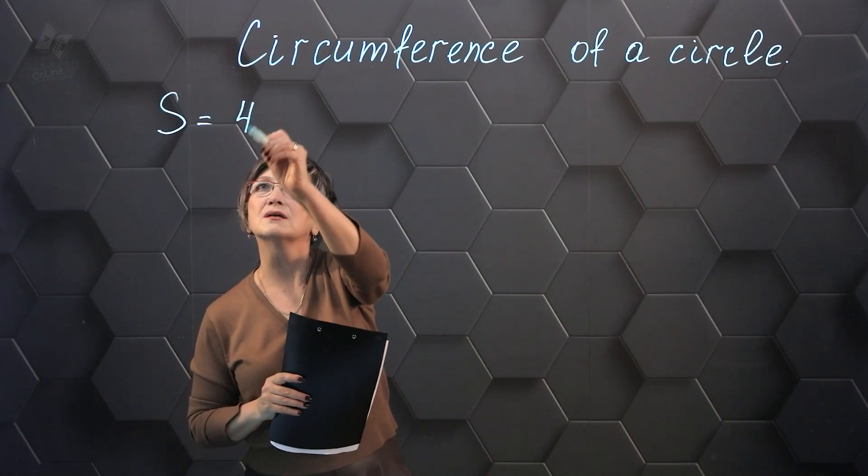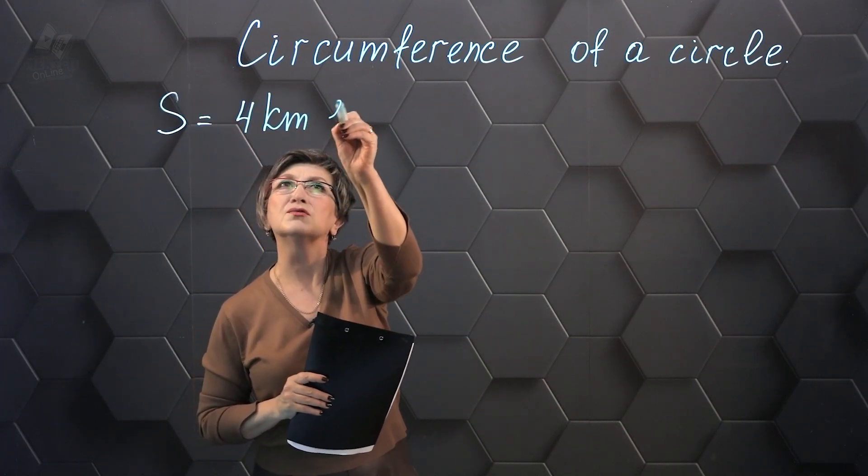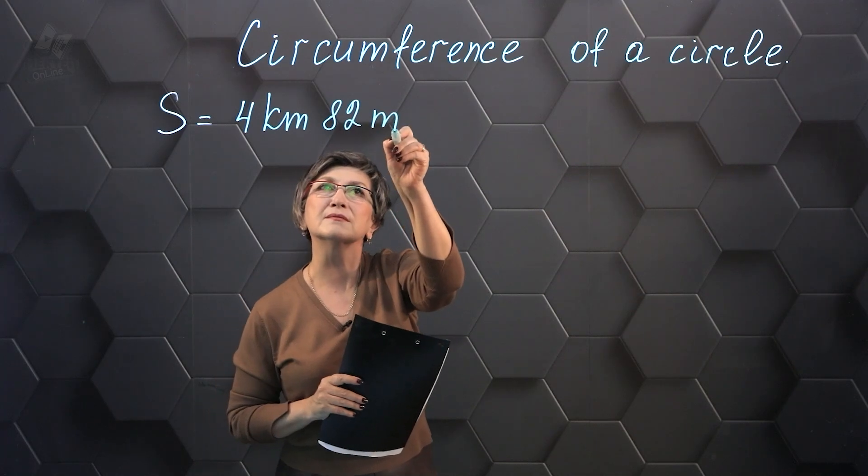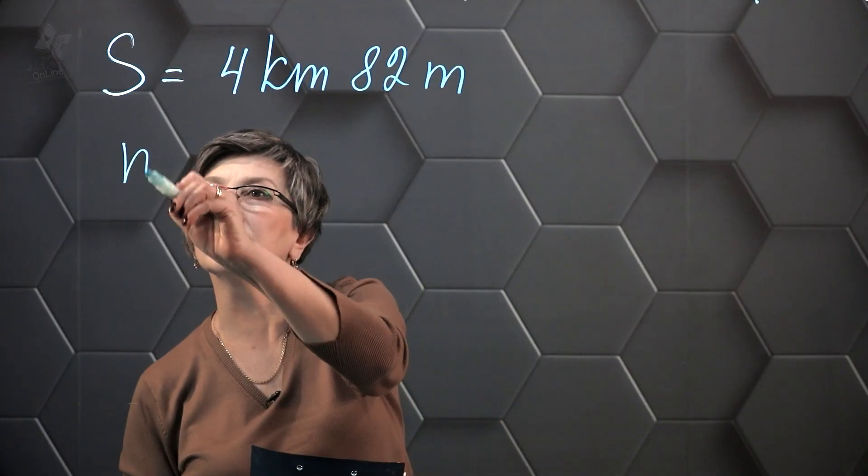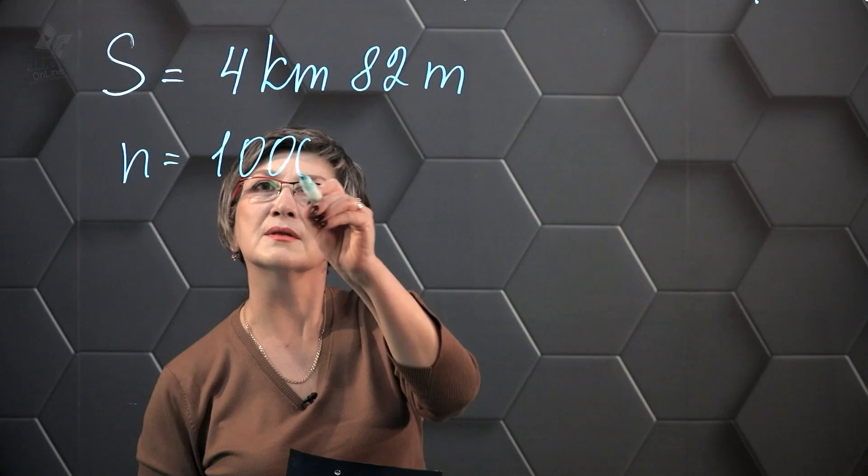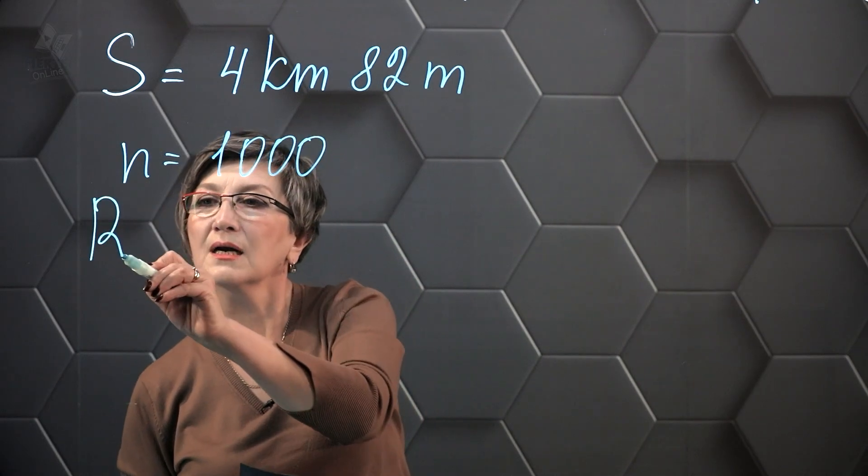The distance is 4 kilometers, 82 meters. The number of revolutions is 1000. We need to find the radius of the wheel.